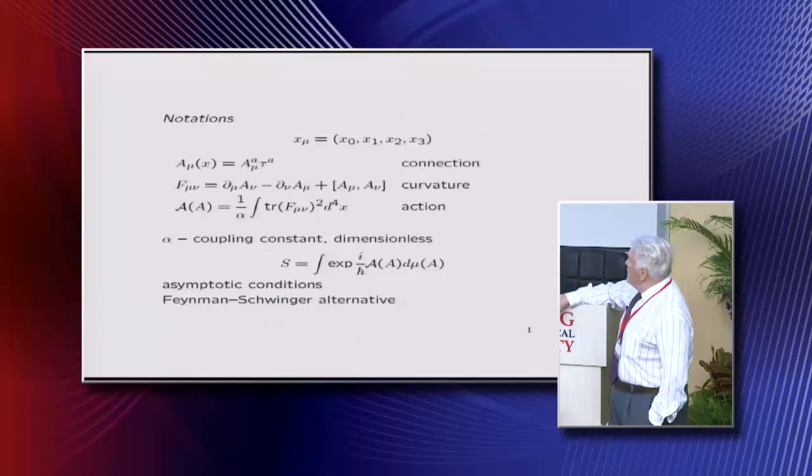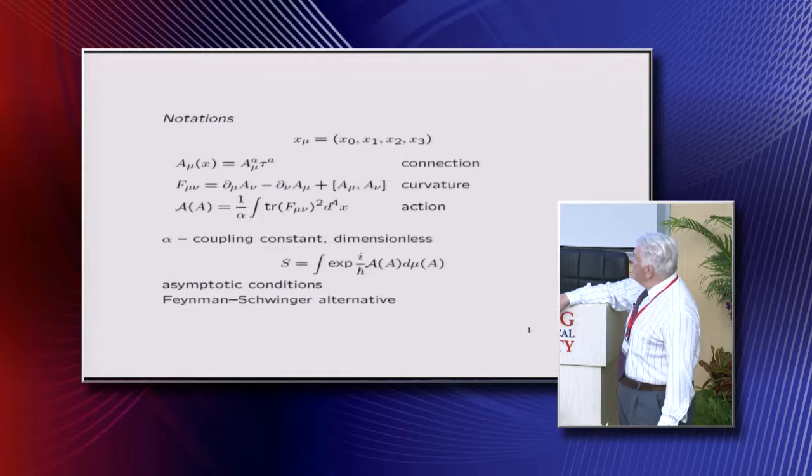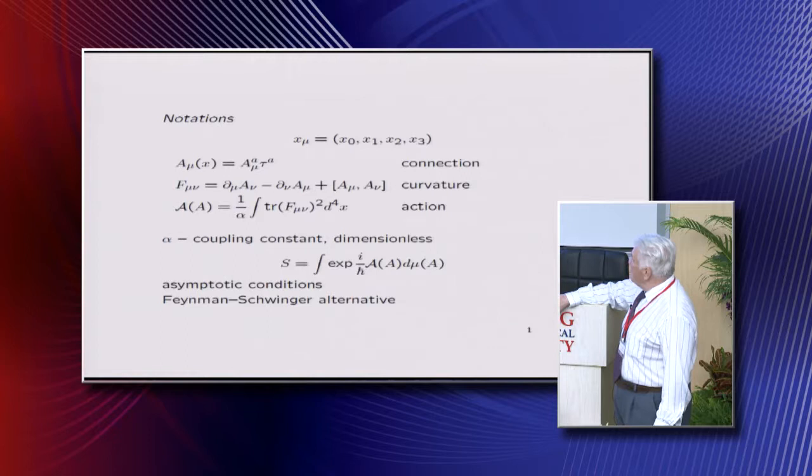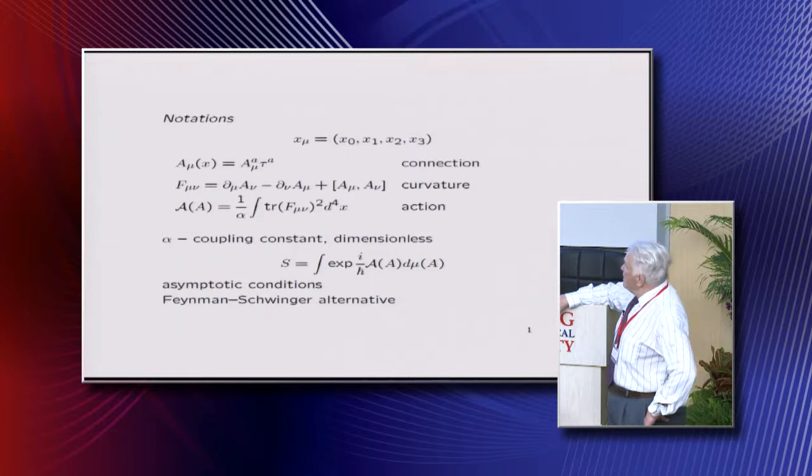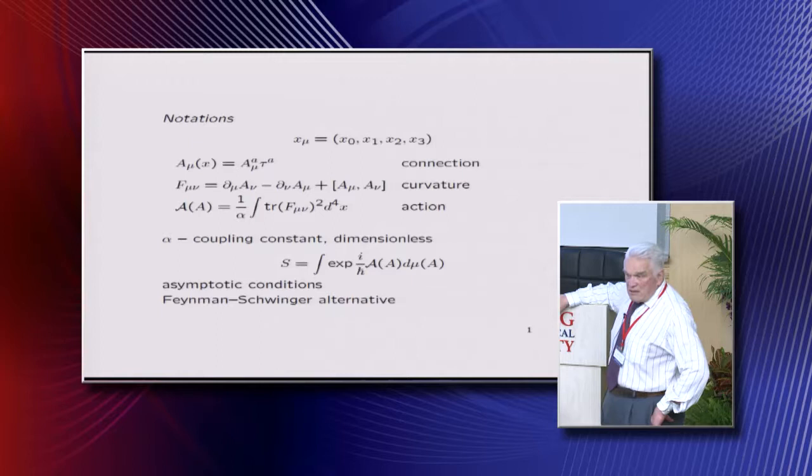So let me begin. First notations, usual space-time. Yang-Mills field is described as a matrix-valued vector field. There's famous formula for curvature. Action, which is trace of F_mu squared, and alpha is coupling constant, which is dimensionless.